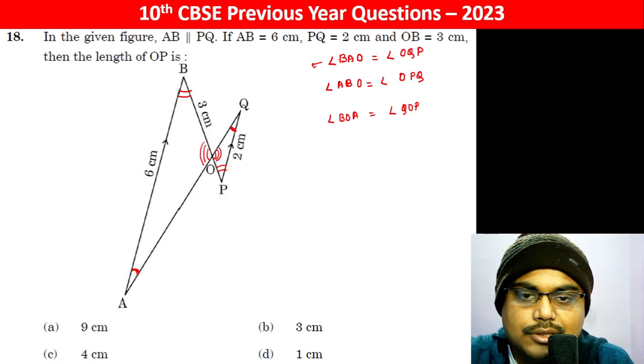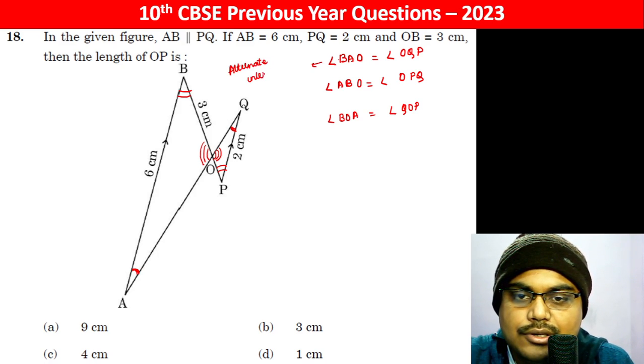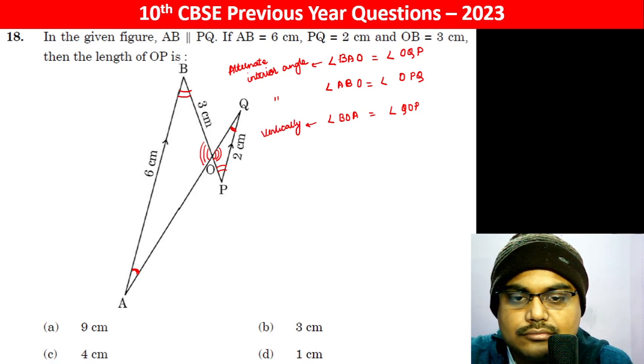So, this is alternate interior angle, and this is vertically opposite angle.